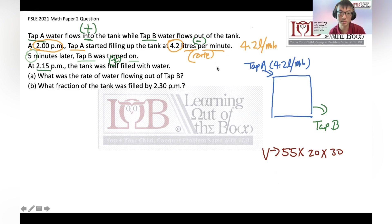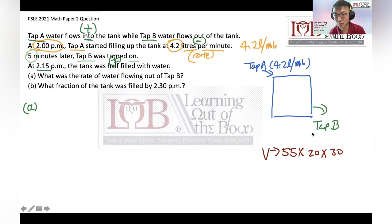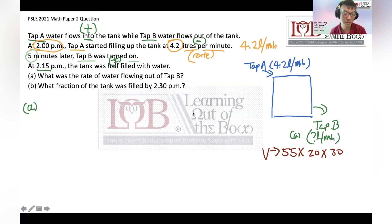Let's solve Part A — what was the rate of water flowing out of Tab B? We put a question mark and note 'Part A — liters per minute.' The question mark gives me a sense of direction of what I need to solve, so I don't keep looking back at the question and can better use my time.